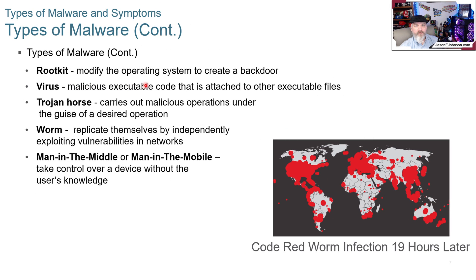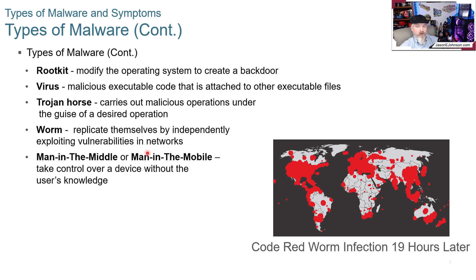A rootkit modifies the operating system to create a backdoor. Viruses are malicious executable code attached to other executable files. Trojan horses carry out malicious operations under the guise of a desired operation — you run a program thinking it's working properly, but something malicious is happening in the background. The term comes from the story of the Trojans using the horse to gain entry to the city. A worm replicates itself by independently exploiting vulnerabilities in the network.